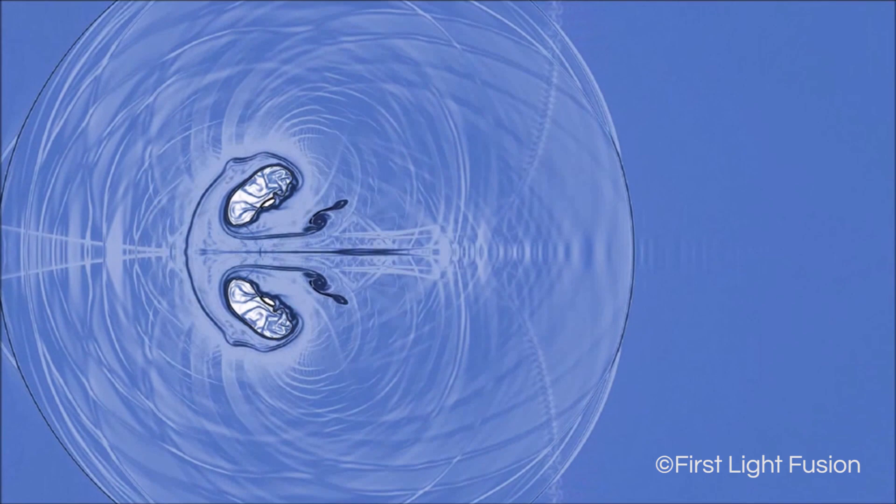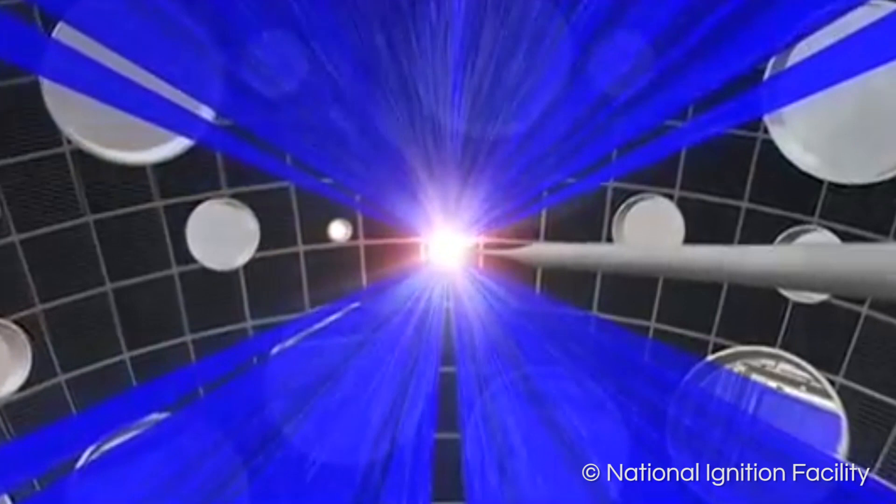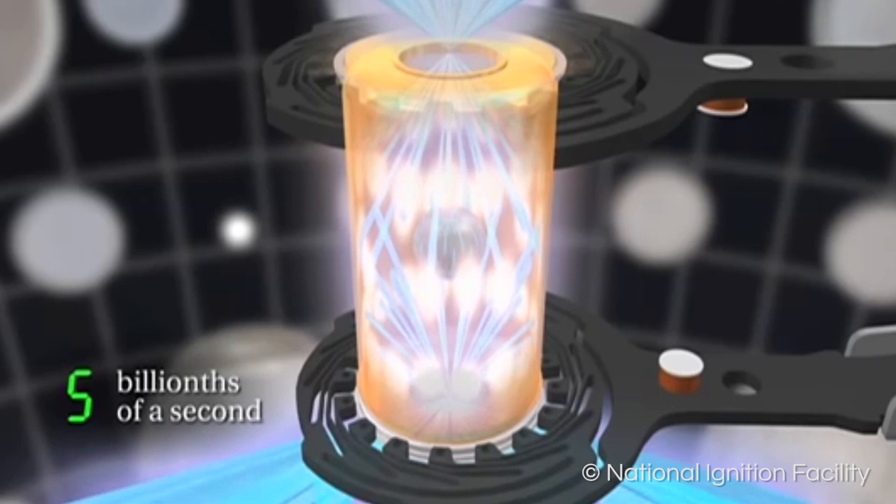Inertial confinement uses a fuel pellet's own inertia, that is its inability to move away fast enough to keep the fuel trapped and hot. Intense laser beams compress a tiny fuel pellet to obtain fusion conditions in the center of the pellet. Others use shock waves.